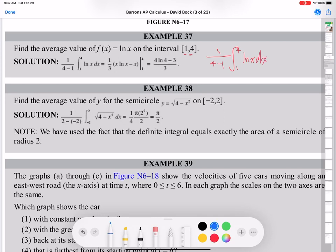You remember that integral of ln(x) dx, there was x times ln(x) minus x plus c. I really recommend you memorize this formula. You can prove it using integration by parts, but just memorize it, much easier. So 1 over 4 minus 1, that part is 1 third.